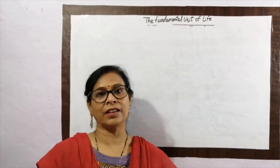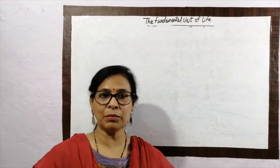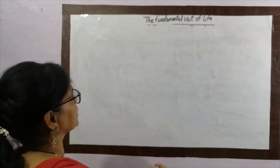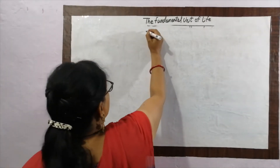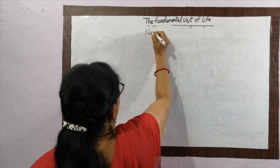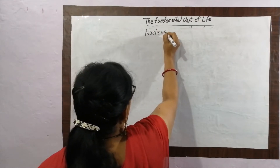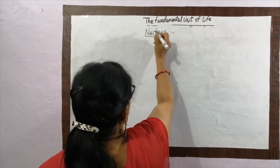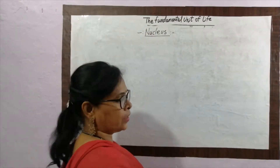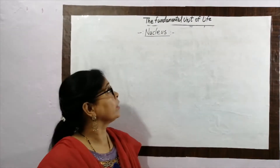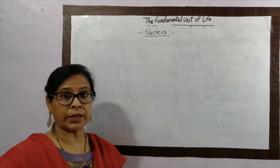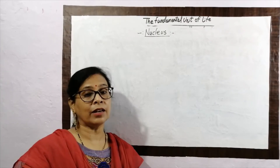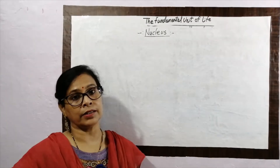Welcome students to CBSC class 9, the same topic — the fundamental unit of the cell. Today we are going to discuss about the next cell organelle, which is called the nucleus. That is the third cell organelle we are going to study about. Firstly, we studied about the plasma membrane, then the cell wall, and third is the nucleus.